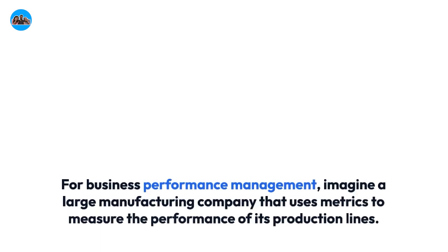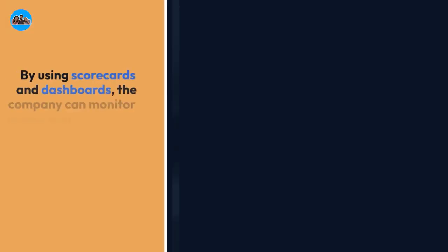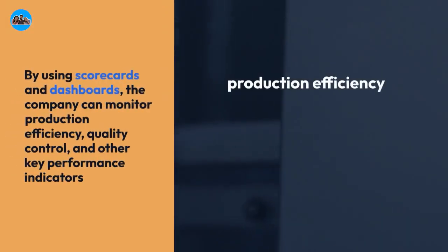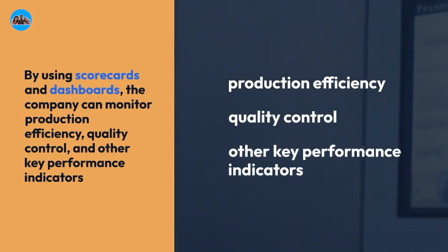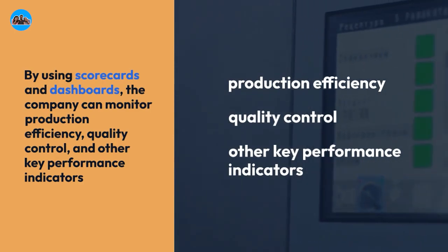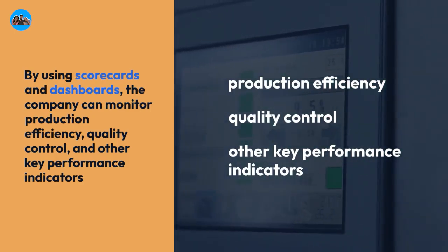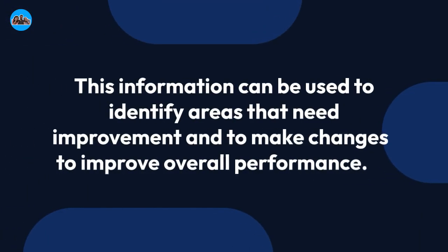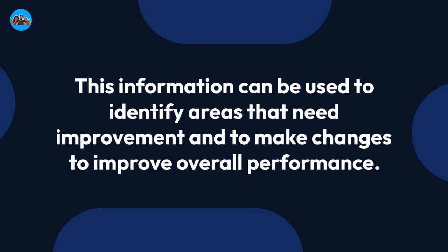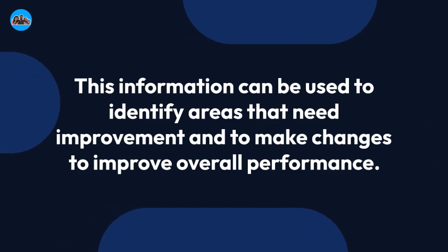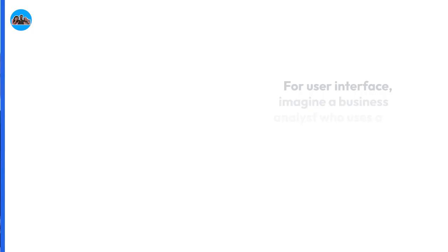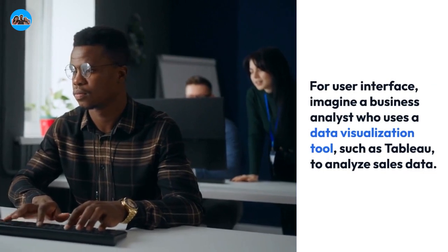For business performance management, imagine a large manufacturing company that uses metrics to measure the performance of its production lines. By using scorecards and dashboards, the company can monitor production efficiency, quality control, and other key performance indicators. This information can be used to identify areas that need improvement and to make changes to improve overall performance.